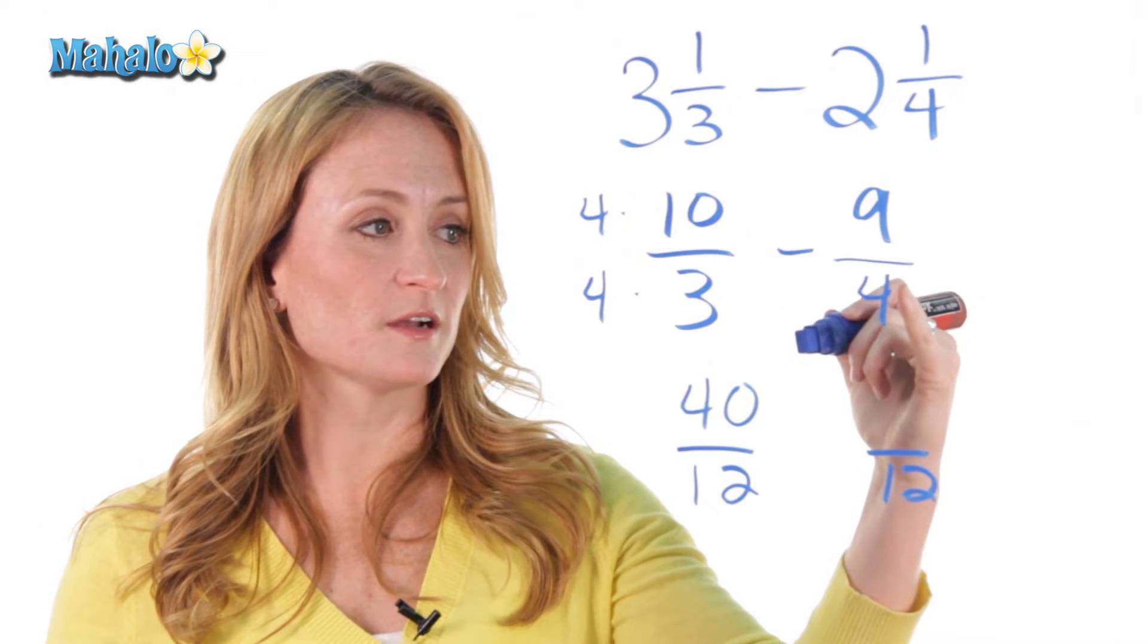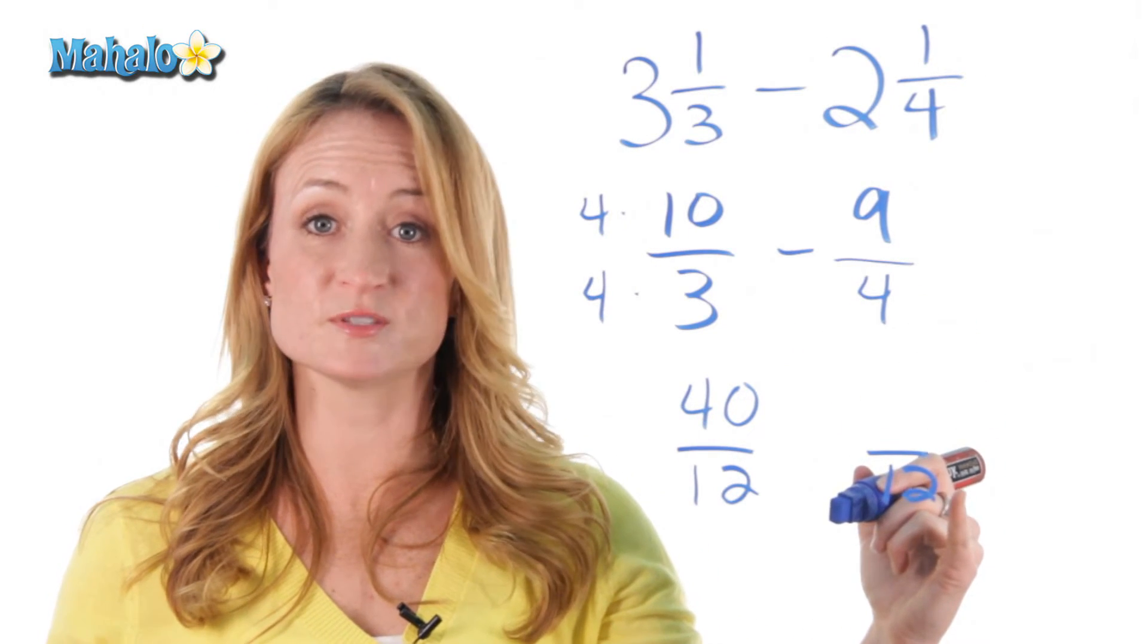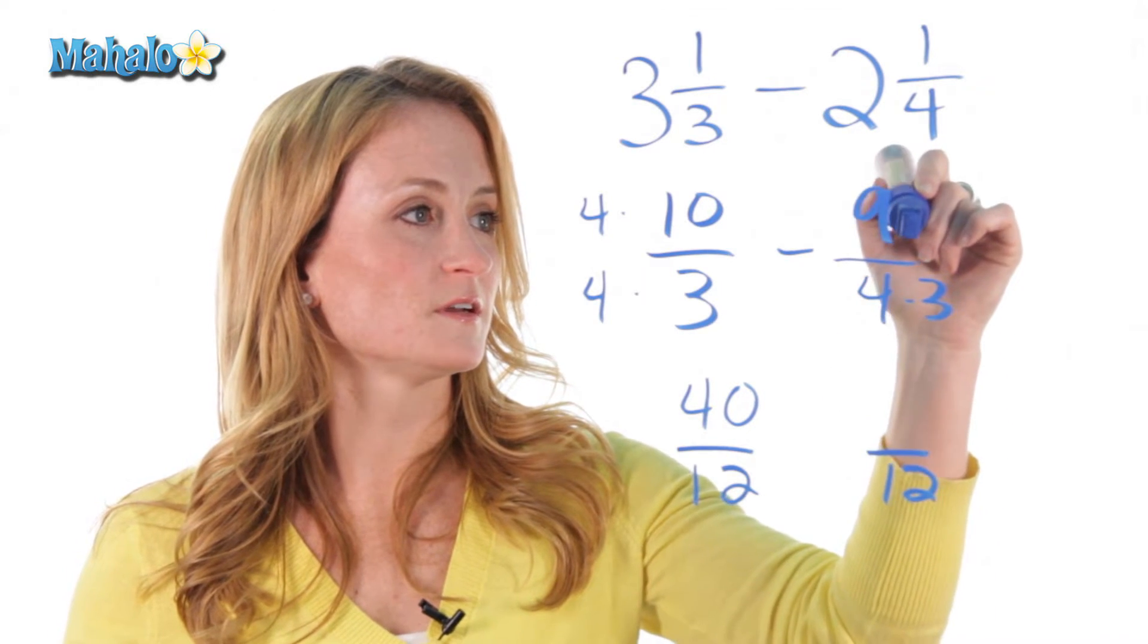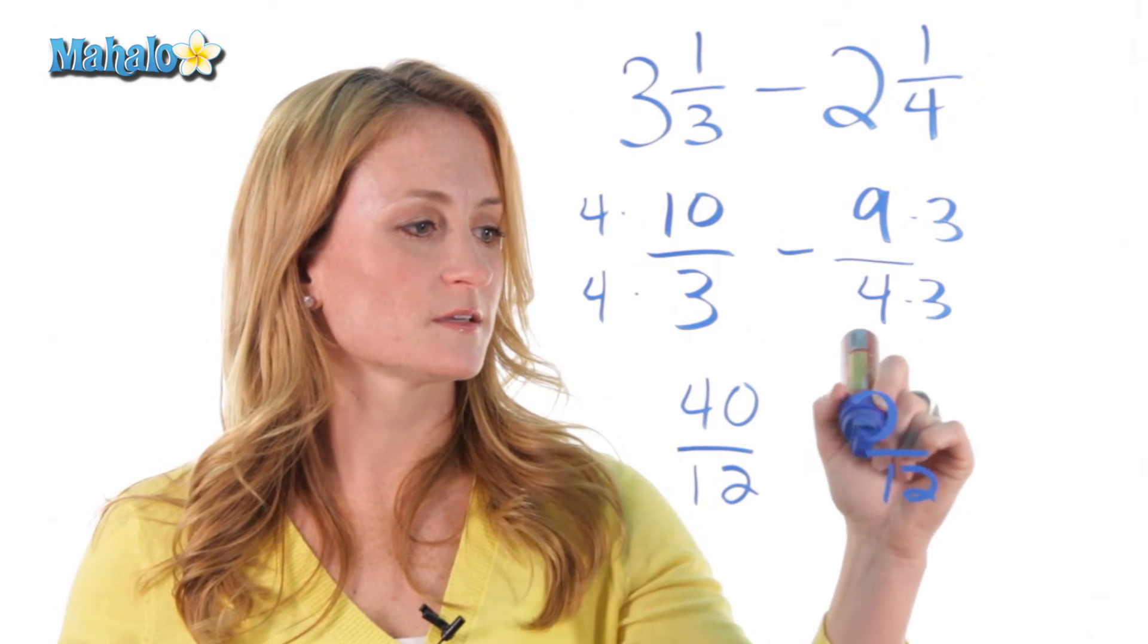What did we do over here? How did this 4 become a 12? Well, we multiplied it by 3. 4 times 3 is 12, and 9 times 3 is 27.